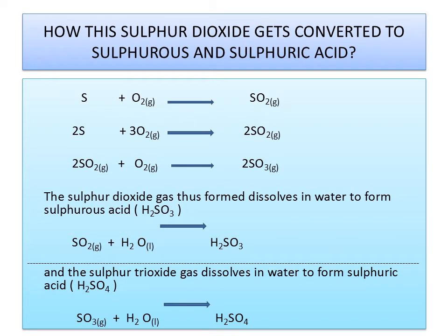How does sulphur dioxide get converted to sulphurous and sulphuric acid? Sulphur combines with oxygen to give sulphur dioxide (SO₂). In excess, it can produce sulphur trioxide (SO₃): SO₂ + O → SO₃. Sulphur dioxide dissolves in water to form sulphurous acid (H₂SO₃). Sulphur trioxide (SO₃) dissolves in water (H₂O) to form sulphuric acid (H₂SO₄).